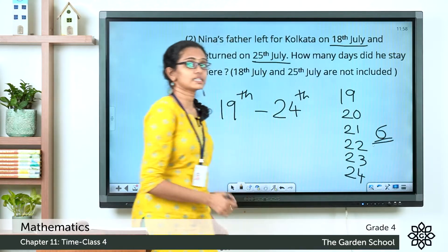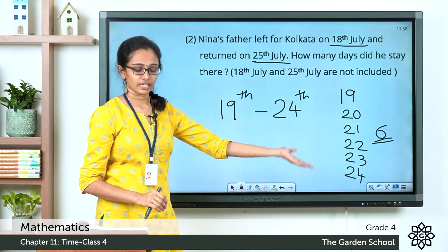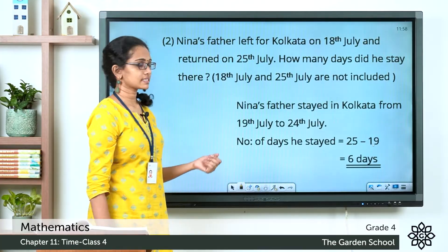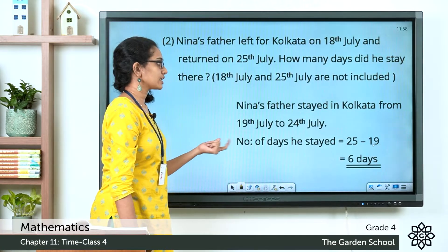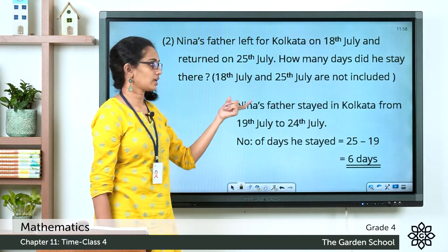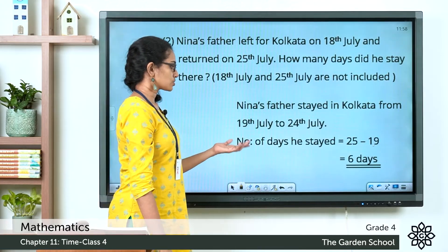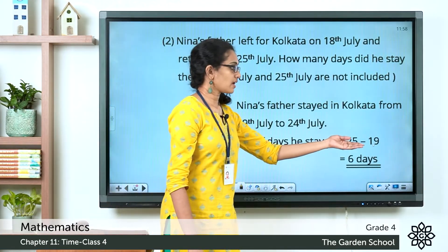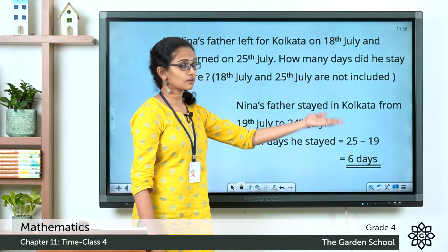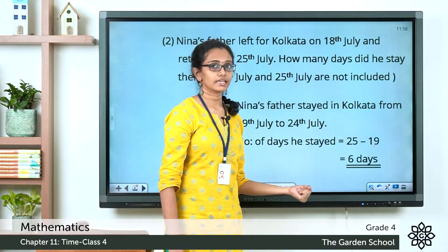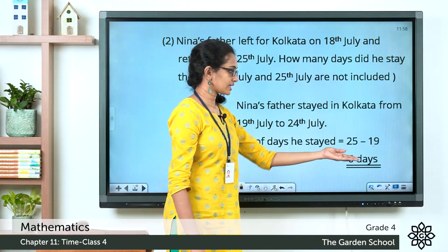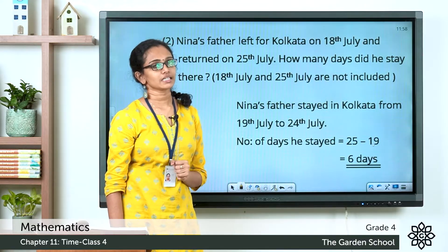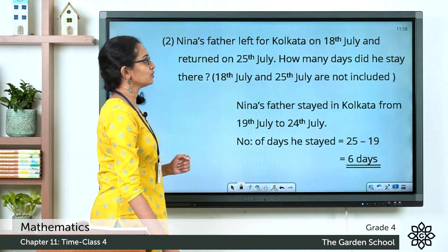He stayed in Kolkata for 6 days. You can also work through the steps: Nina's father stayed from 19th July to 24th July. The number of days is equal to 25 minus 19, which is 6 days. Hope this is clear to you.